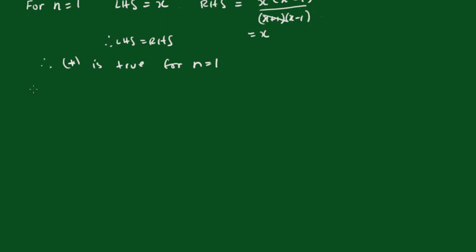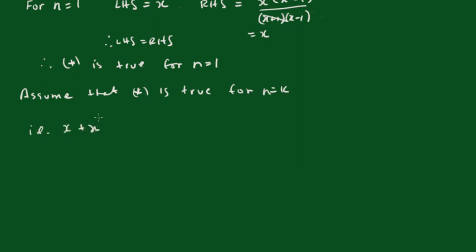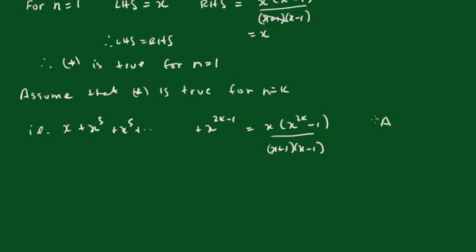Now we'll assume that the statement is true for n equals k, that is: x plus x cubed plus x to the power 5 plus all the way along to x to the power 2k minus 1 equals x times (x to the 2k minus 1) all over (x plus 1)(x minus 1). That's our assumption statement.